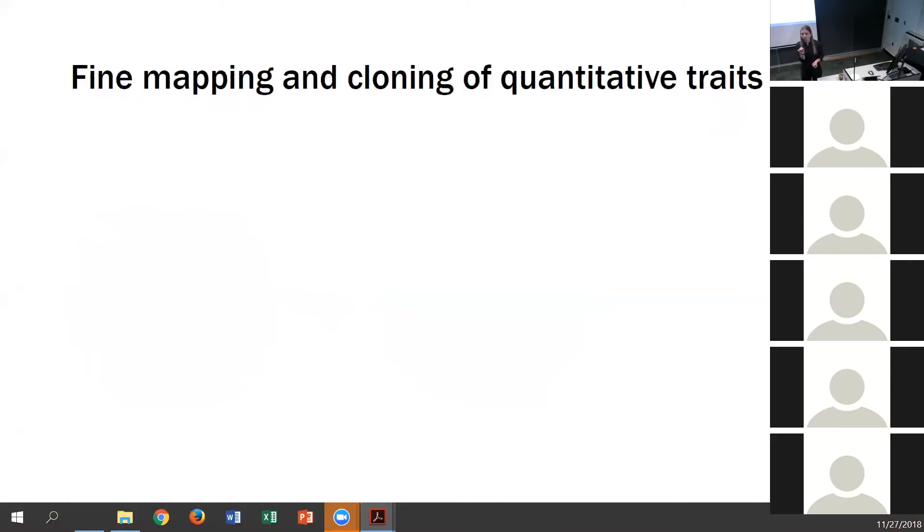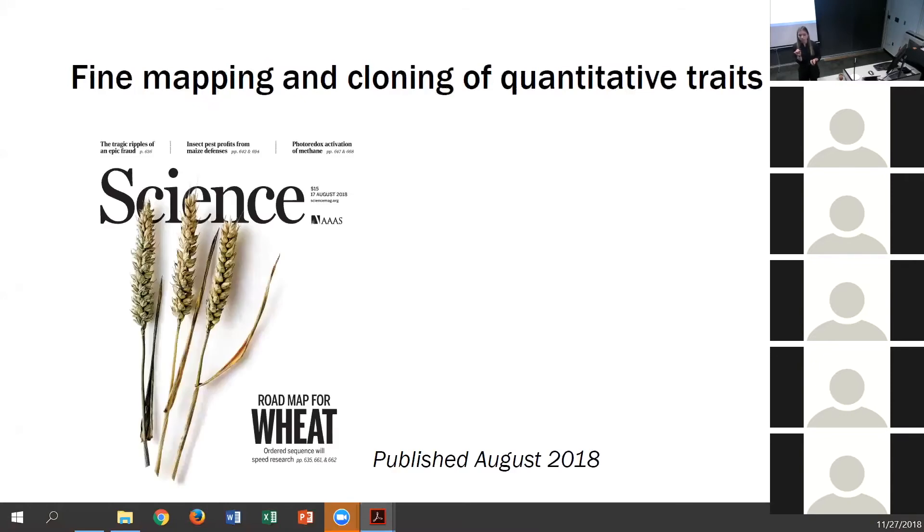the wheat community has recently had the release of new tools that are going to allow us to go beyond QTL associations and actually pursue fine mapping and cloning of those traits. Those include the release of a fully annotated wheat reference sequence genome, as well as the prospects of gene editing and tools like CRISPR. We can pursue the fine mapping and positional cloning of yield components.